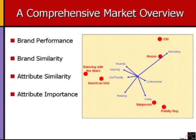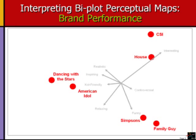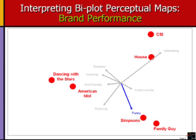Let's go through the four interpretations using the TV show example. Let's begin by looking at the attributes, selecting the attribute Funny as an example. Imagine that the attribute vector extends outward in both directions. To assess how well brands do on the Funny attribute, we now imagine a perpendicular line to the Funny attribute vector. We start by imagining the perpendicular line is out as far on the map as it can be in the direction the arrow points.